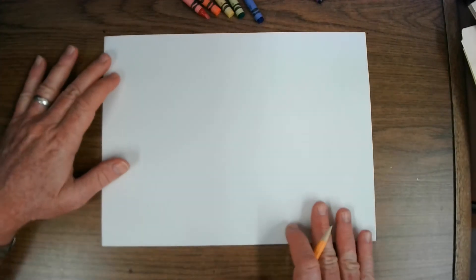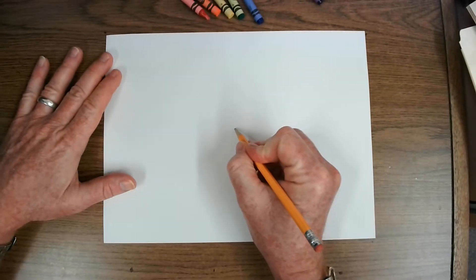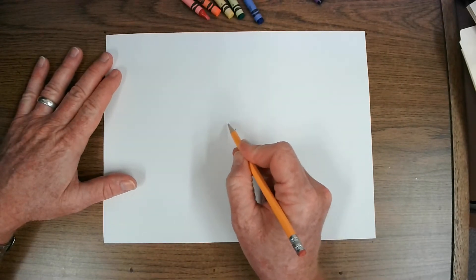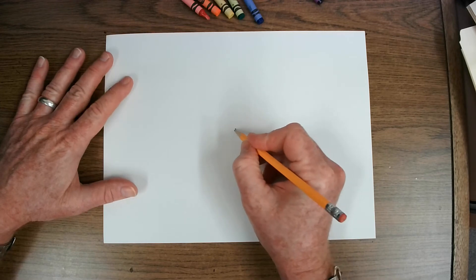Now, on a clean piece of paper what I want you to do is find a spot in the middle and we'll make a little dot. We are going to make a line, a curved line that goes around that dot like a cinnamon roll and gets bigger and bigger and bigger.